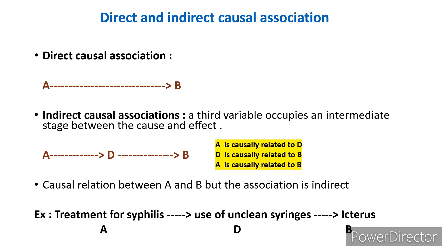Direct and indirect causal associations: a causal association is of two types, direct and indirect. A direct causal association is simply A causing B. In an indirect causal association, a third variable occupies an intermediate stage between cause and effect — A causes D and D causes B, so A is causally related to B, but indirectly because there is an intermediate variable between A and B.